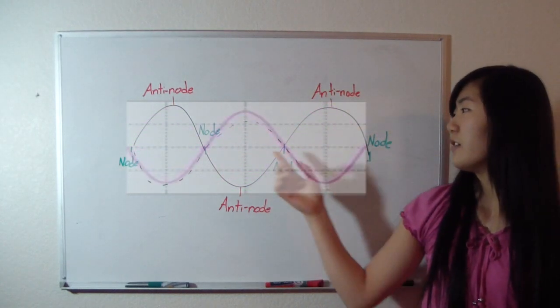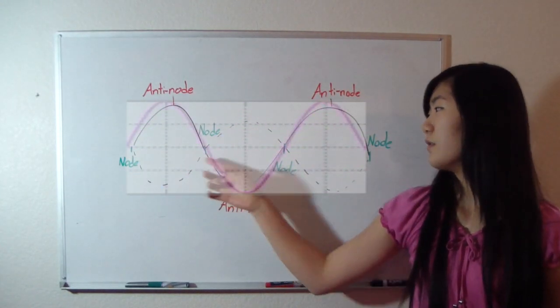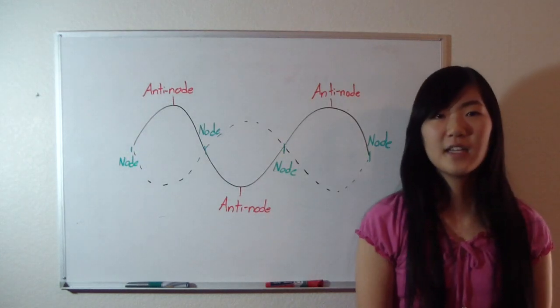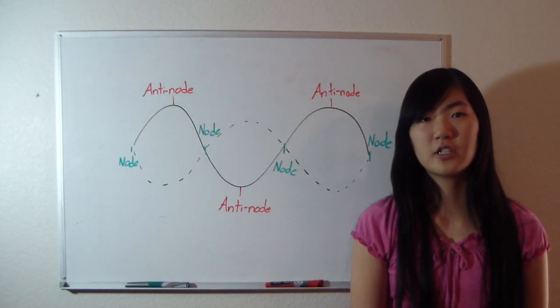In this picture, there are three anti-nodes and four nodes. The significance of standing waves will be later explained when mentioning harmonics.